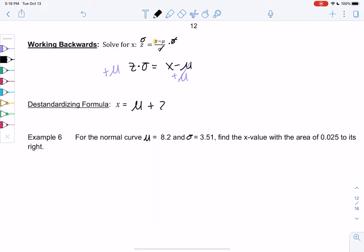And that's our de-standardizing formula. It's mu, the mean, plus the z-score times sigma. So you don't have to solve this ever again. You can just use this de-standardizing formula. We use this when we're working backwards.